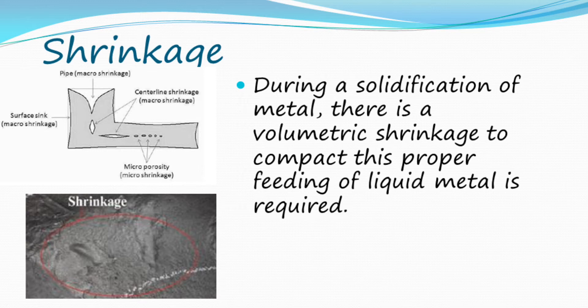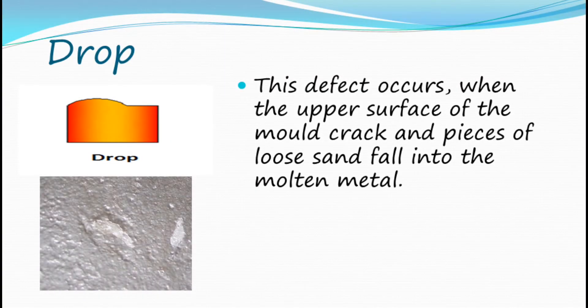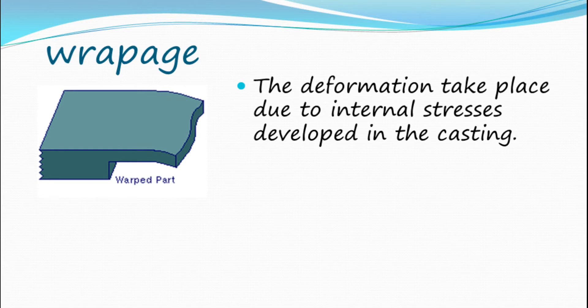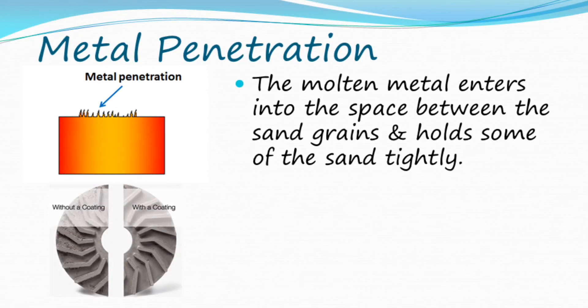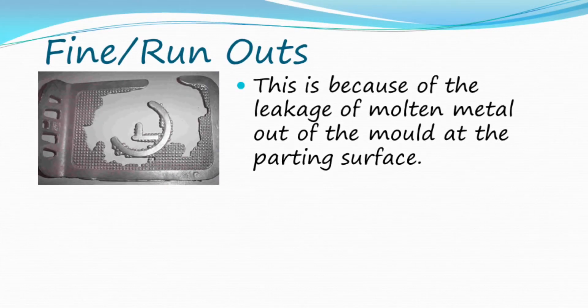Shrinkage: during solidification of metal, there is volumetric shrinkage; to compensate, proper feeding of liquid metal is required. Hot tears: as metal has low strength at high temperature, unwanted cooling stresses may cause the rupture of the casting. Drop: this defect occurs when the upper surface of the mold cracks and pieces of loose sand fall into the molten metal. Warpage: deformation takes place due to internal stresses developed in the casting. Metal penetration: molten metal enters the spaces between sand grains and holds some of the sand tightly. Fusion: this defect results in a brittle and glassy appearance on the casting surface. Fin runouts: this occurs because of the leakage of molten metal out of the mold at the parting surface.